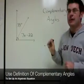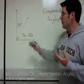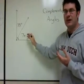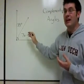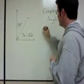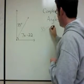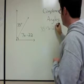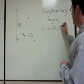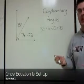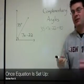So let's do that. We have to use the fact that these are Complementary Angles to set up an equation. So 35 plus 7x minus 22 equals 90. So let's write that first: 35 plus 7x minus 22 equals 90. Now we just have to use some algebra to solve this.